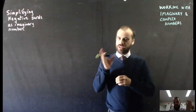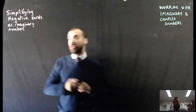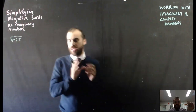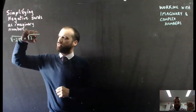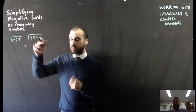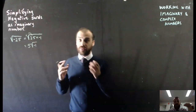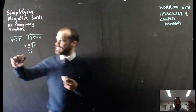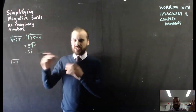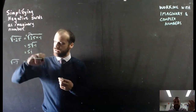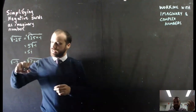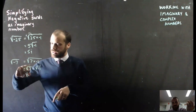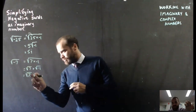Just simplifying a couple of negative roots. Root negative 25 is the same as root of 25 times negative 1, which is 5 times root negative 1, which is 5i. Root negative 7, same deal — it's going to be root 7 times negative 1, which is root 7 times root negative 1, which is root 7 · i.